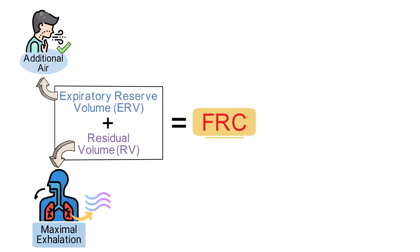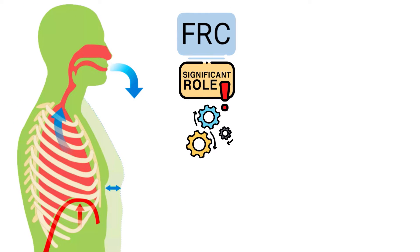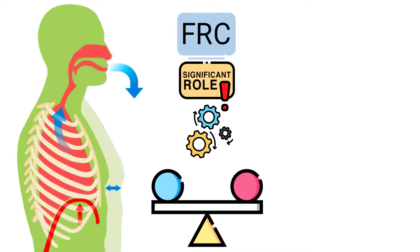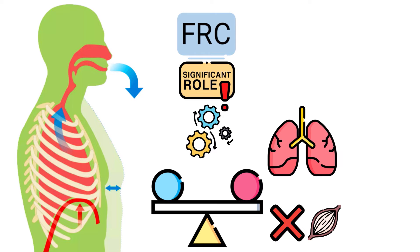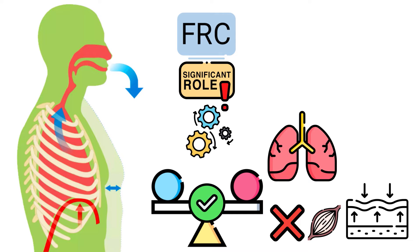Understanding FRC is vital for various reasons. First, it plays a significant role in the mechanical aspects of breathing. The lungs and the chest wall naturally want to move in opposite directions — the lungs aim to collapse inward while the chest wall strives to expand outward. The FRC is the equilibrium point at which these two opposing forces are balanced, meaning no additional muscular effort is needed to keep the lungs at this volume.